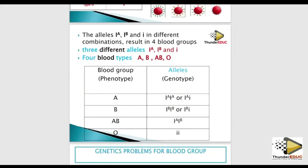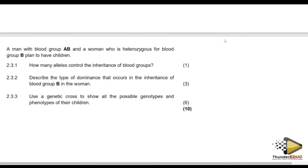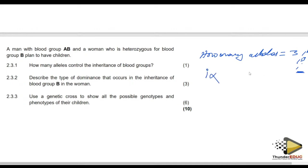I always tell students that before you go to the paper, you must answer these questions because at least one question will come about blood group alleles. We said there are three: allele for A, allele for B, and allele for O. Please don't modify these alleles. The I is a Roman numeral — write capital I, then superscript A; capital I superscript B; and small i for O. If you modify them, you will get a zero.